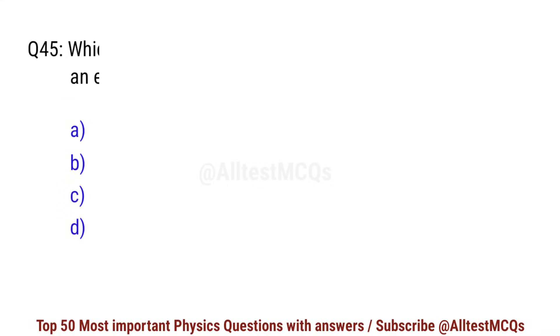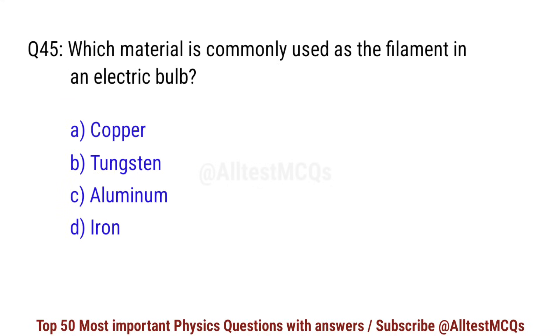Question number 45. Which material is commonly used as the filament in an electric bulb? Right option is B. Tungsten.